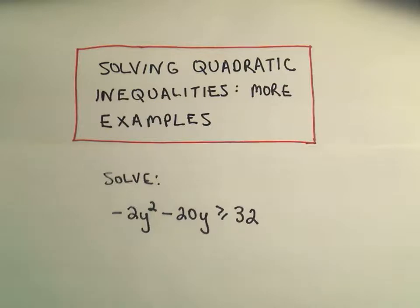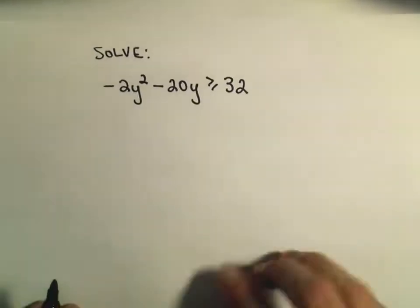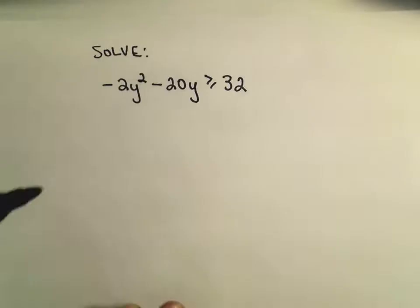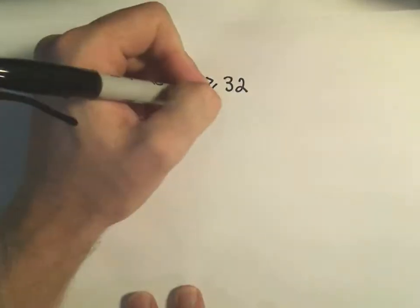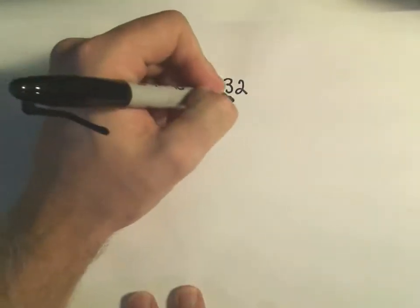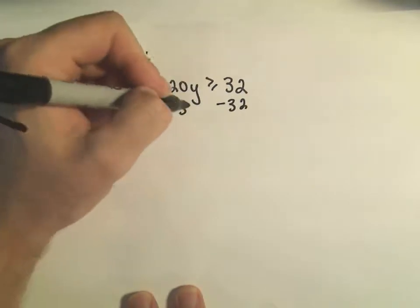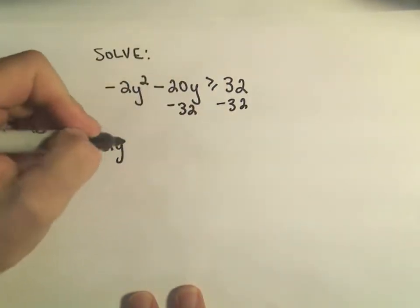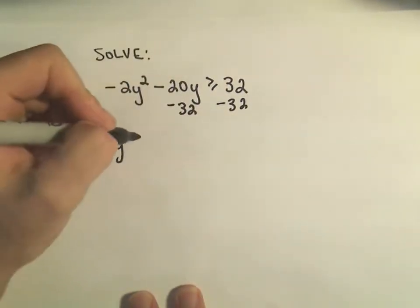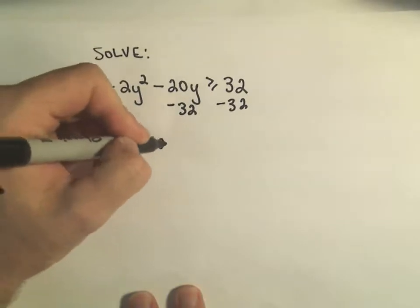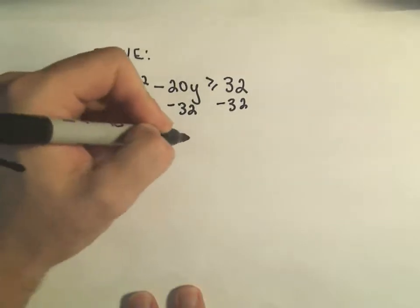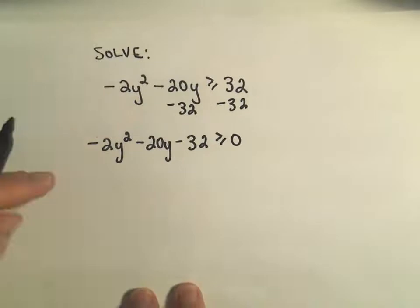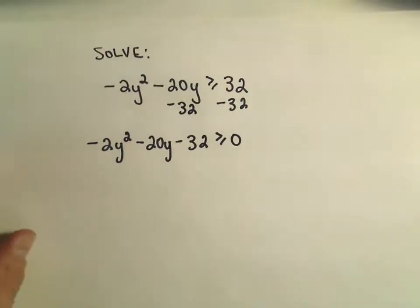The first thing I do is always make one side of my inequality equal to zero. The easiest way to do that is to subtract 32 from both sides. So on the left side we'll have negative 2y squared minus 20y minus 32, and that's going to be greater than or equal to zero.